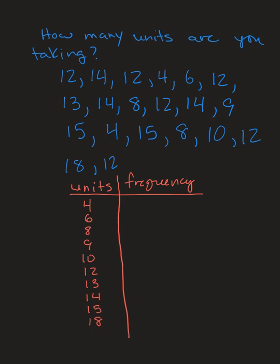I write down all the different units and next I'm going to write the frequency. For example, for four I am going to count how many people said that they were taking four units. That's one, two. Two people. So I put a two there. How about six? For six I see only one, so I put a one there for the frequency. And then for eight I'm going to count, that's one, two. So two people said eight, so I put a two here.